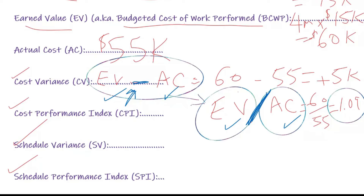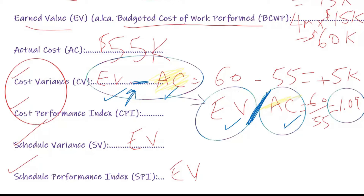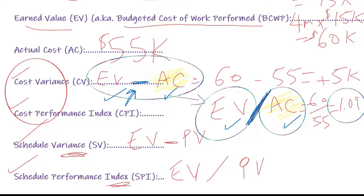All four formulas — cost variance, cost performance index, schedule variance, and schedule performance index — start with earned value. The ones related to cost (CV and CPI) finish with actual cost. The ones related to schedule planning (SV and SPI) finish with planned value. Variance means subtract; index means divide.